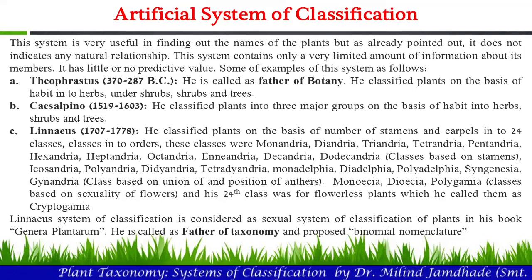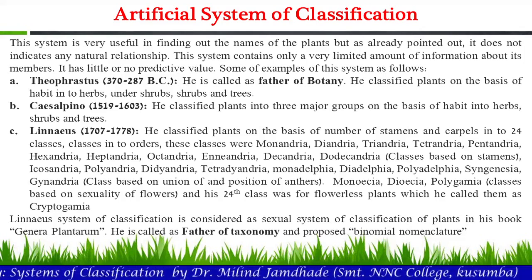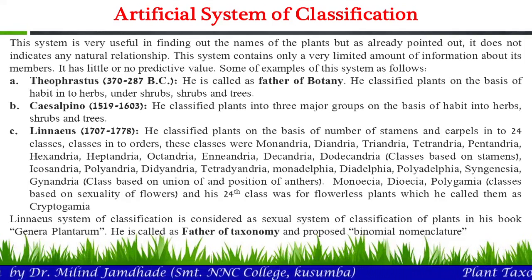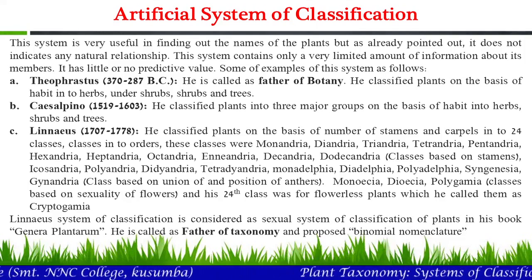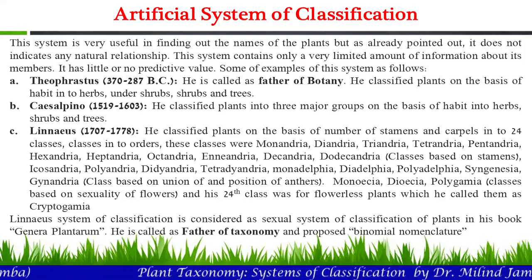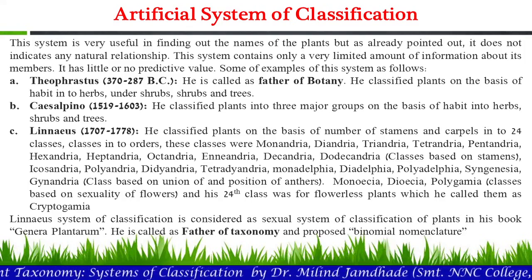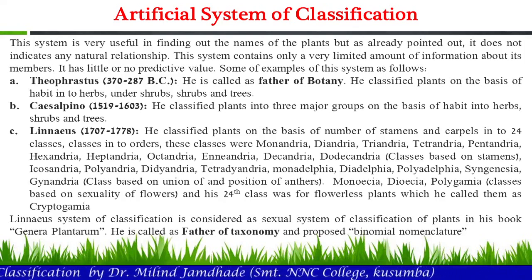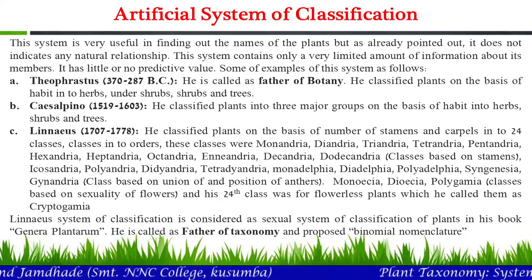This system contains only a very limited amount of information about its members and has little or no predictive value. These are the characteristics of the artificial system. For example, Theophrastus, the father of botany, classified plants on the basis of their habits into herbs, undershrubs, shrubs and trees — classification based on habit only.